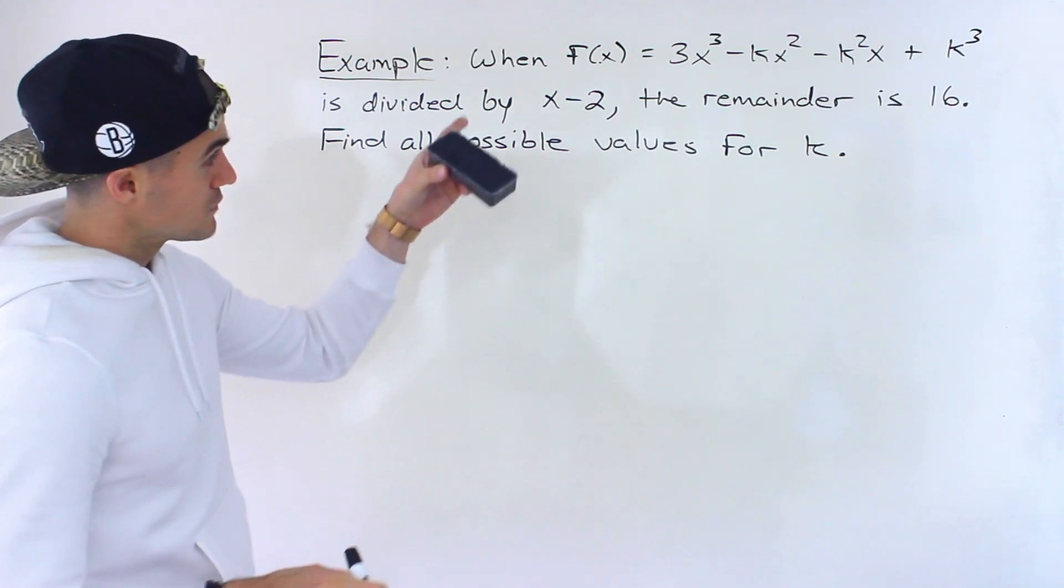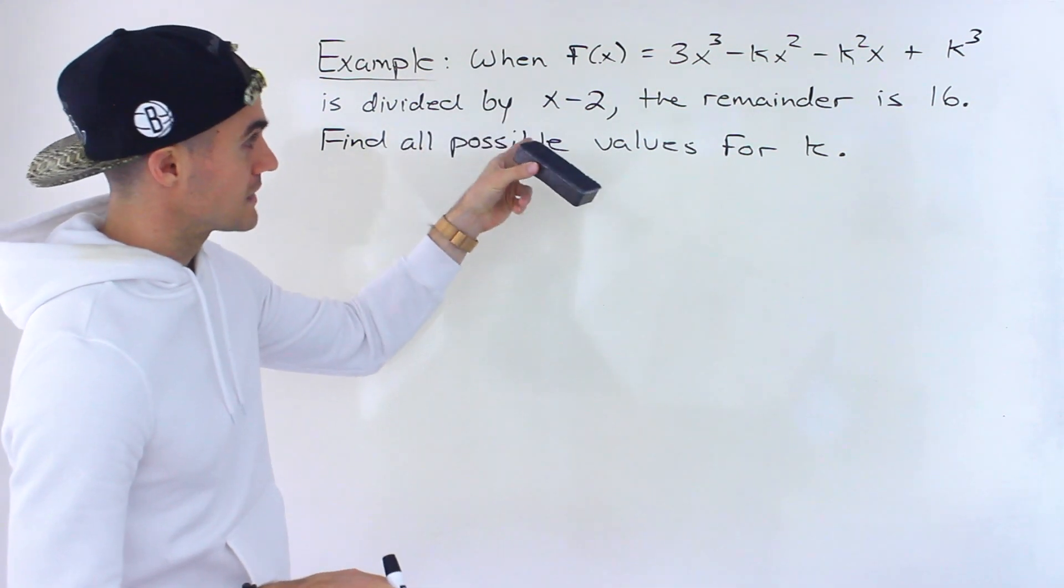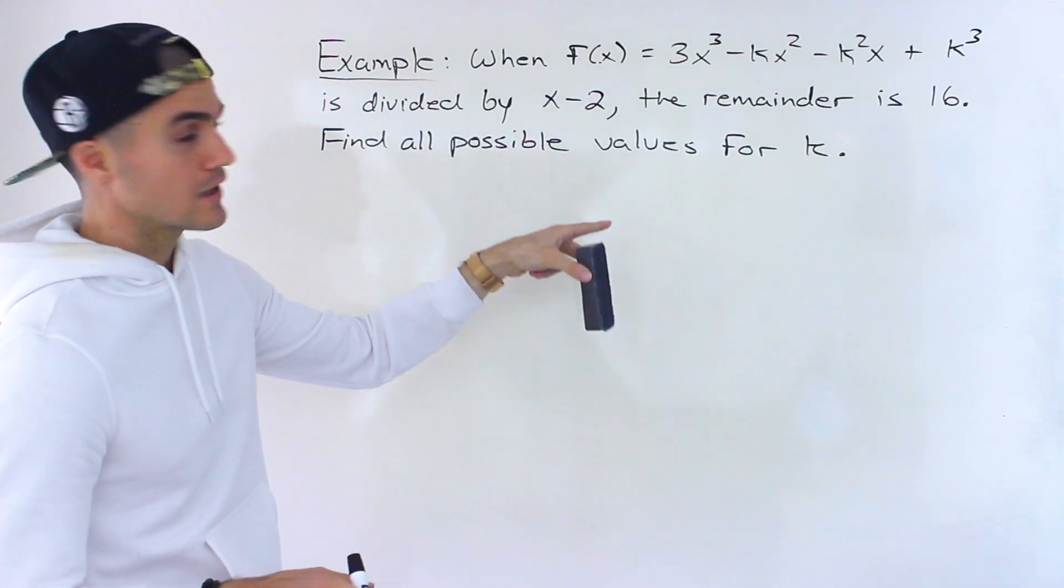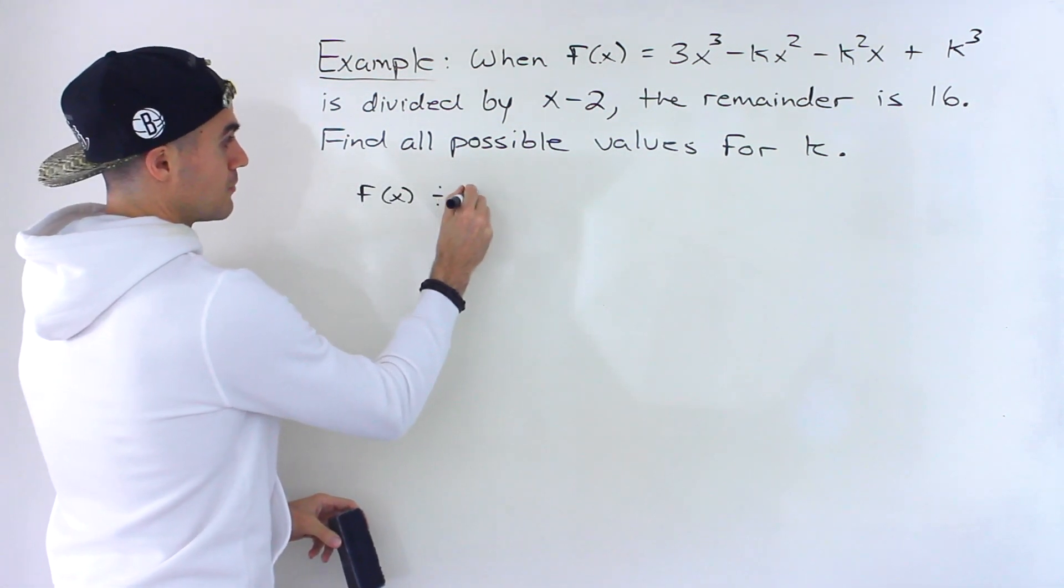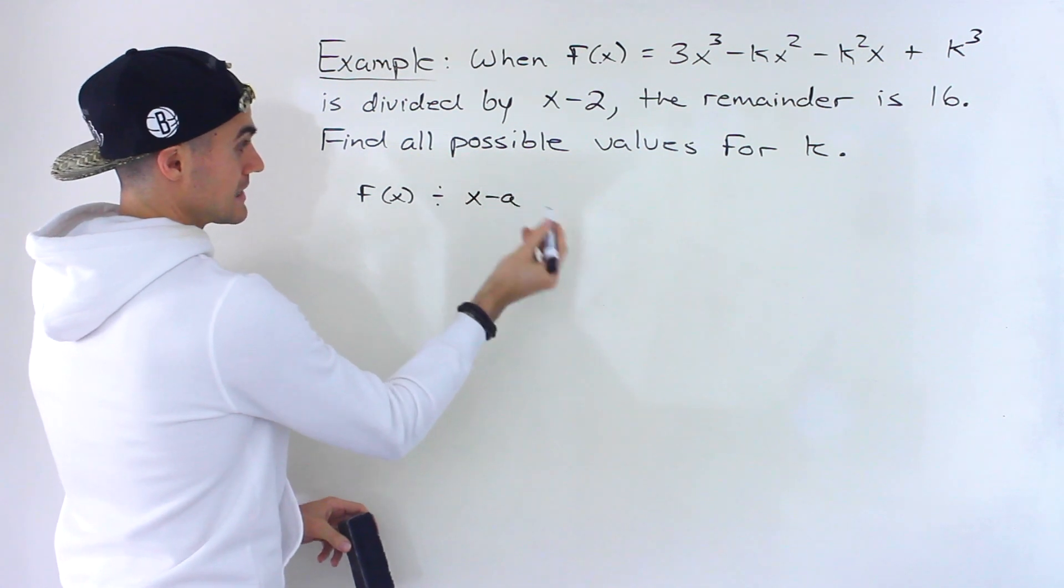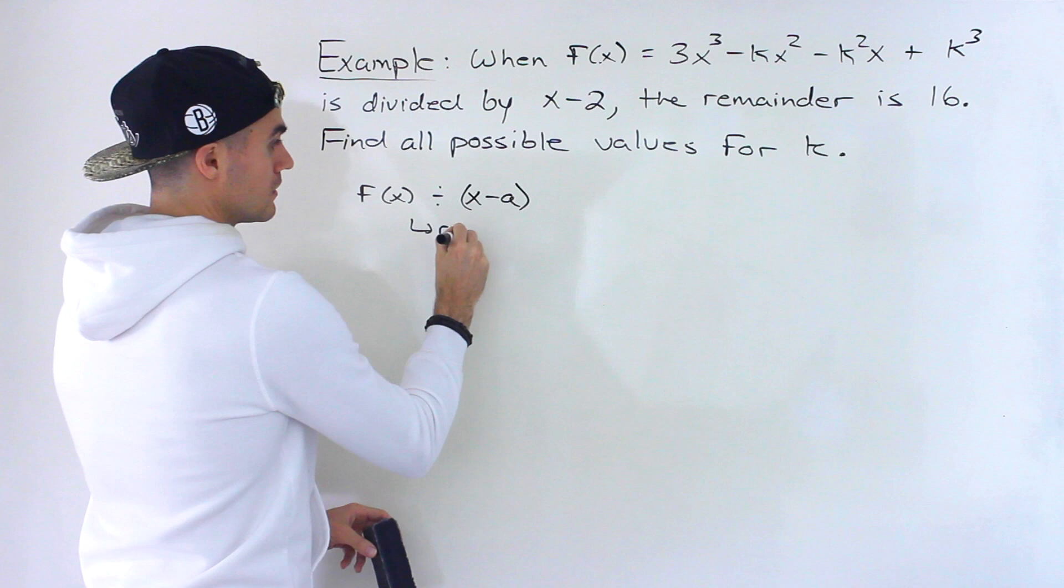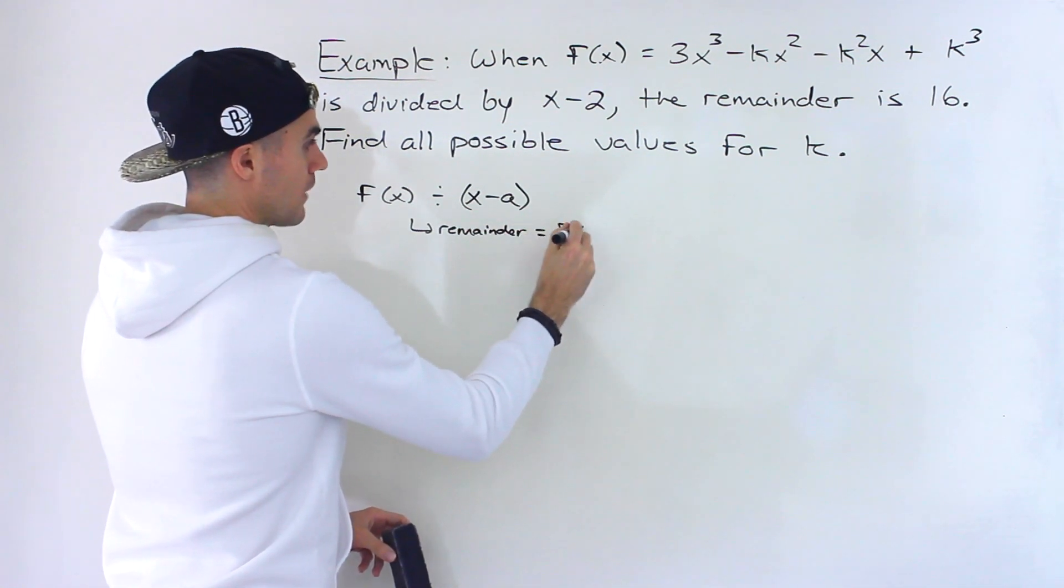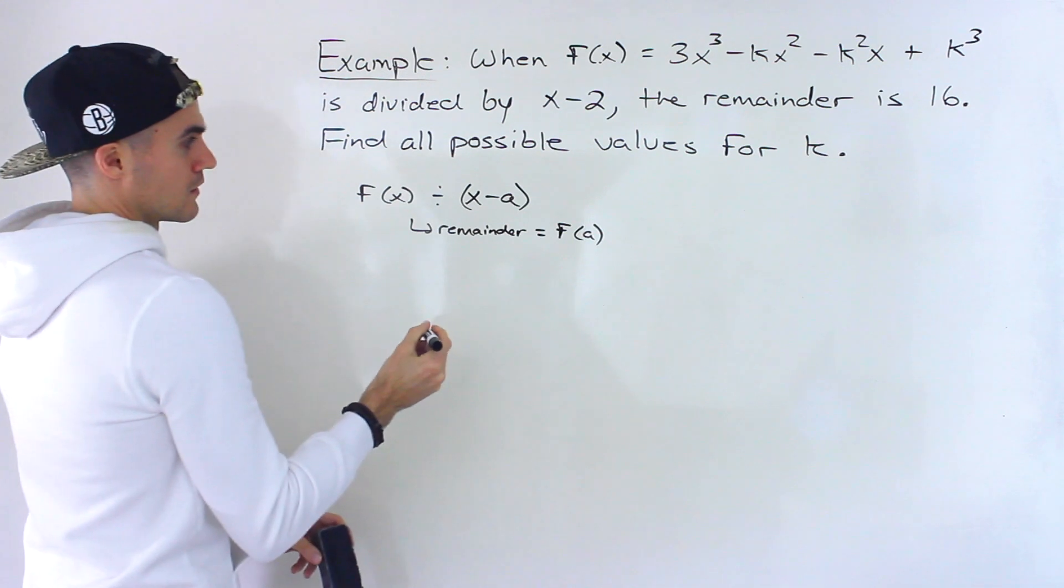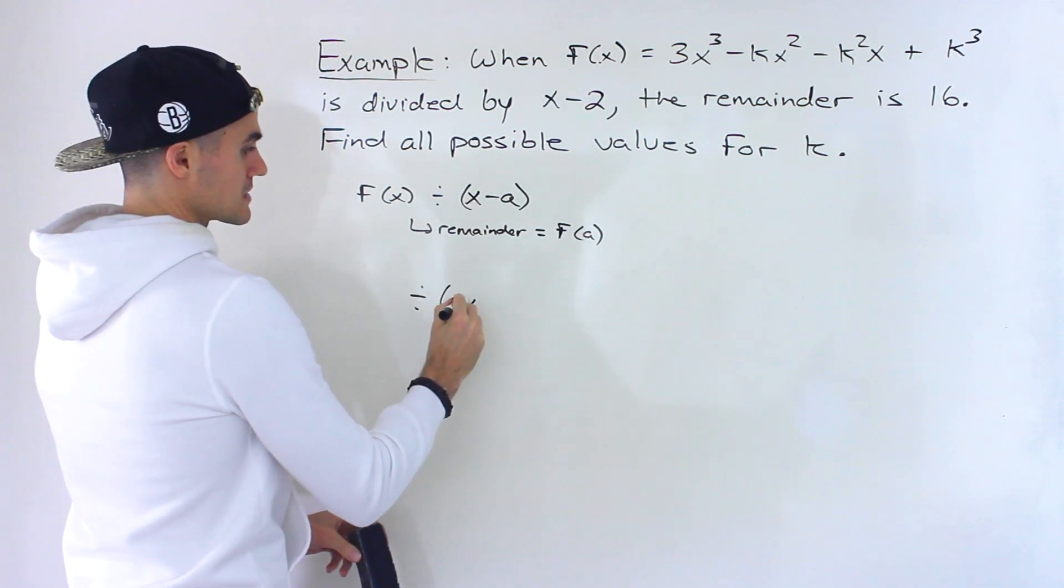Notice we have this polynomial f(x), and when it's divided by x - 2, the remainder is 16. In general, by the remainder theorem, if f(x) is divided by x - a, the remainder equals f(a).